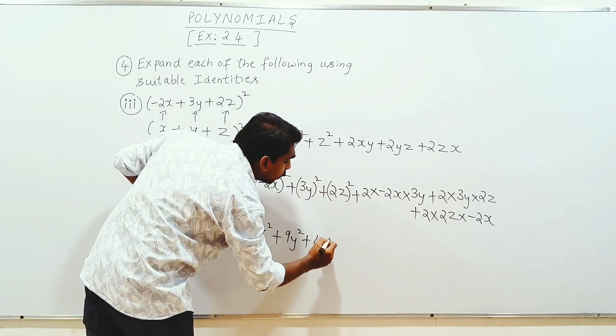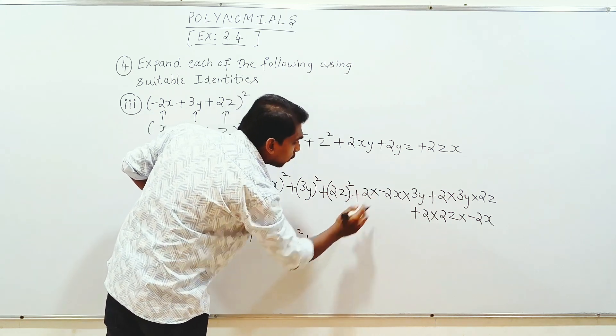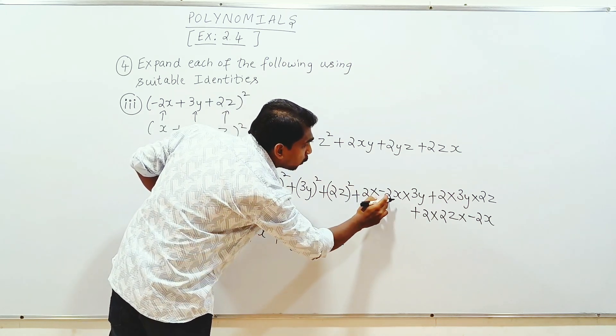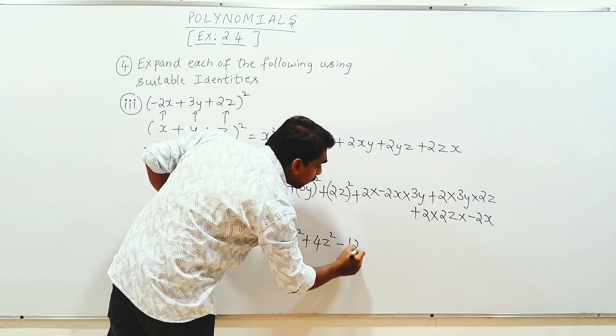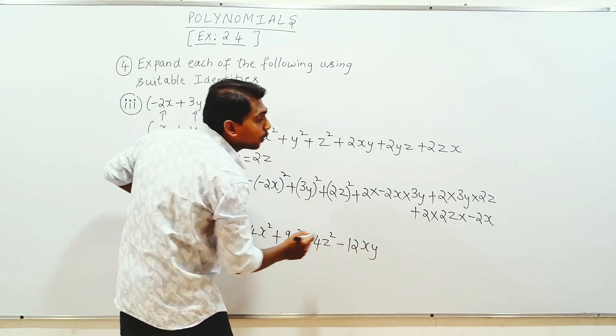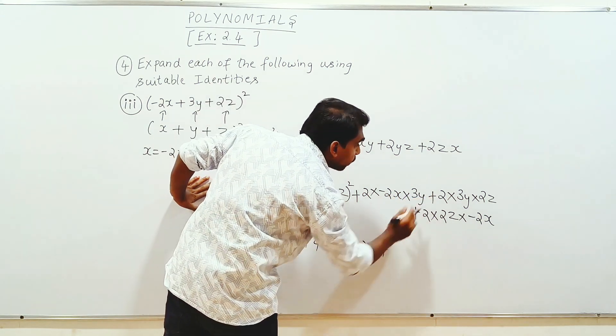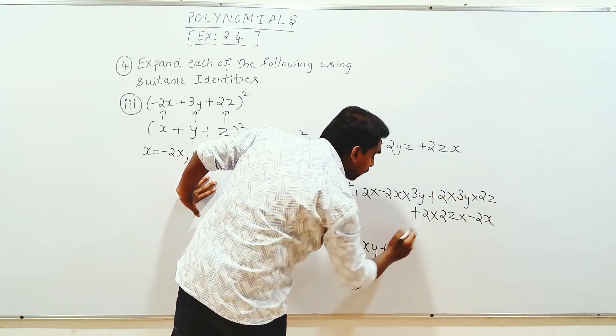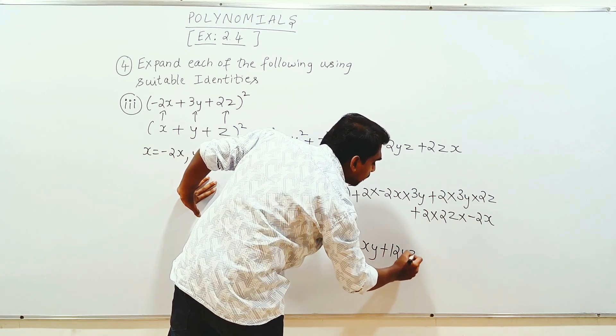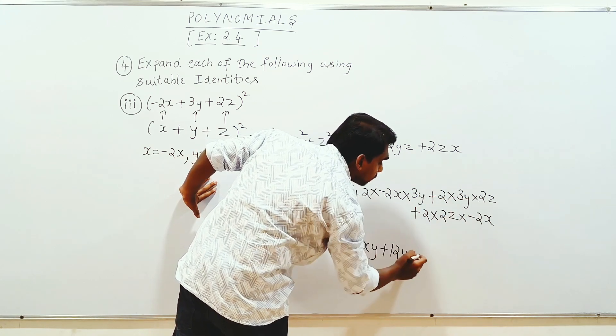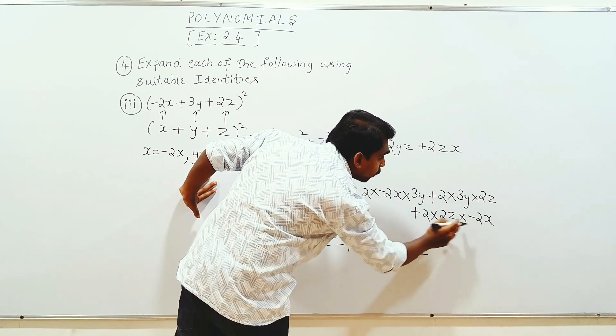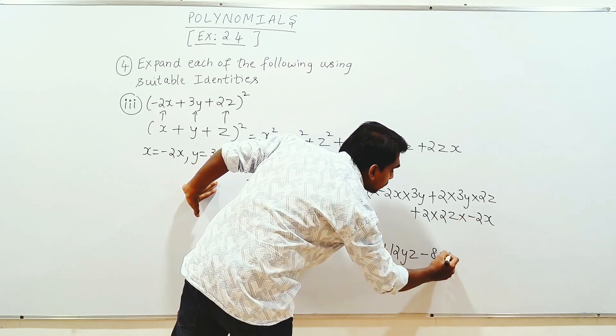Plus 2 into 3 is 6, 6 into 2 is 12yz plus 2 into minus 2 is minus 4, minus 4 into 2 is minus 8zx.